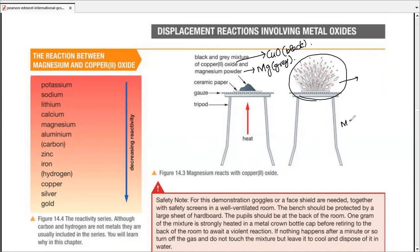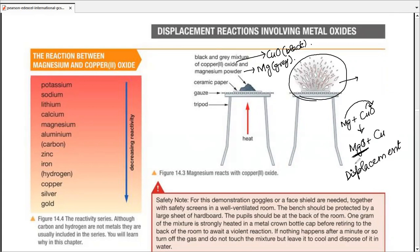Magnesium reacts with copper oxide and forms magnesium oxide, leaving copper out. The reaction is very vigorous — that's why we see that splash. By displacement, I mean copper had a compound with oxygen, so magnesium makes a compound with oxygen as the product and pushes copper out of its place. Displacement is when a more reactive metal takes the place of a less reactive one in a compound or salt solution.